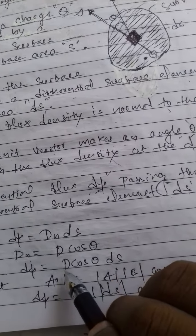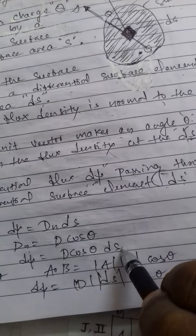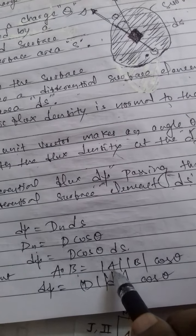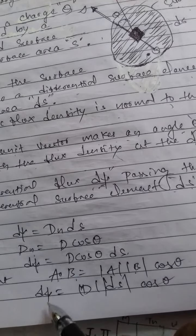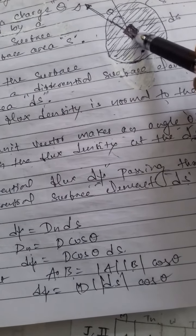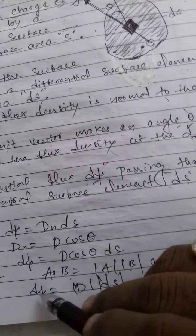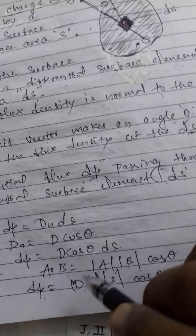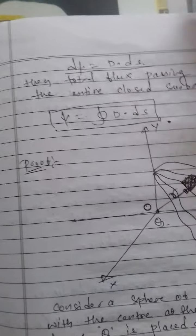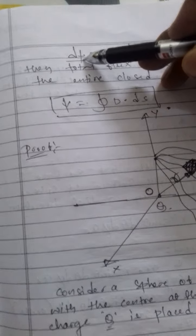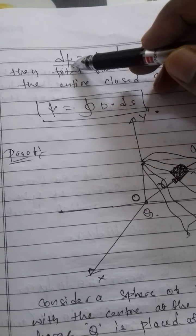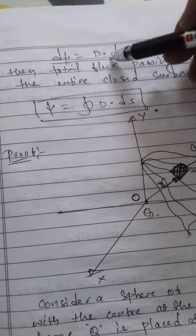The incremental flux can be written as D cos theta dS. Using the dot product property — where A·B equals |A||B|cos theta — the incremental flux passing through the differential surface is dψ = D · dS.